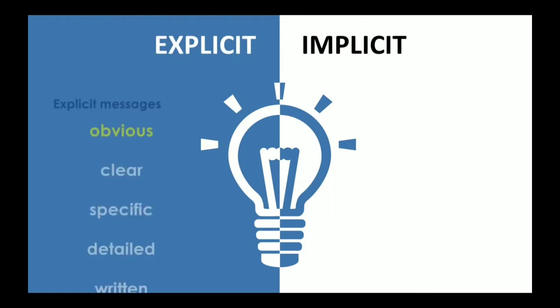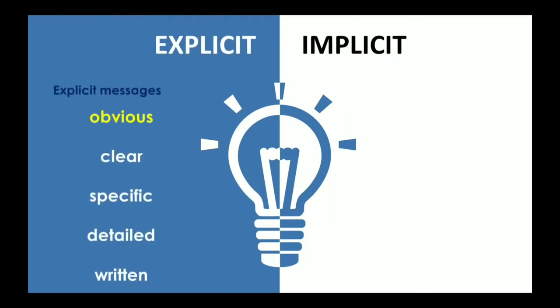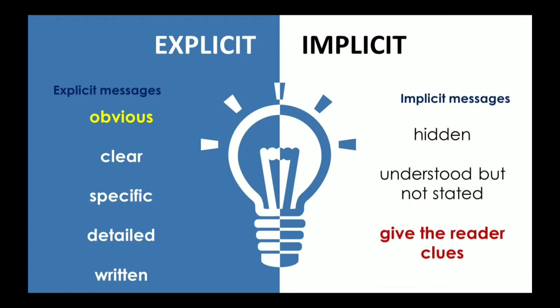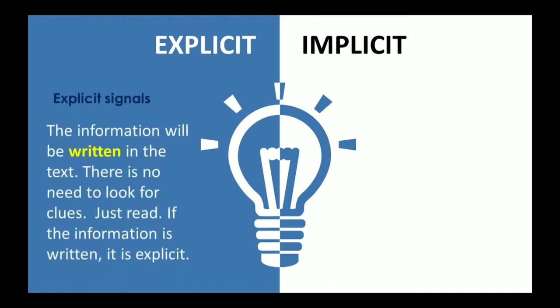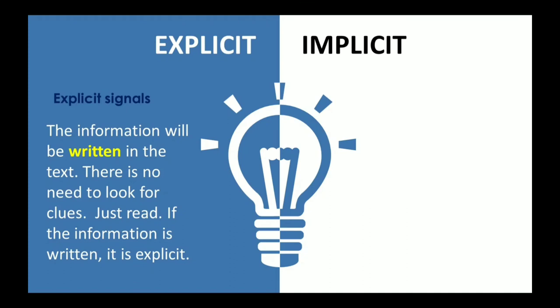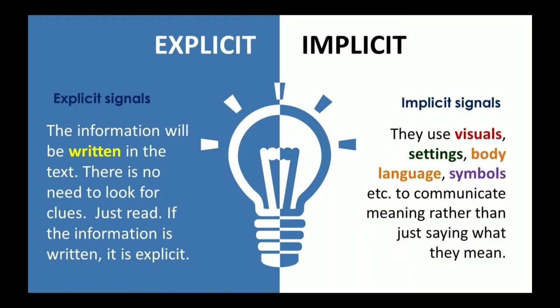Explicit and implicit: Explicit messages are obvious, clear, specific, detailed, and written. Implicit messages are hidden, understood but not stated, and give the reader clues. Explicit signals — the information will be written in the text; there is no need to look for clues, just read. If the information is written, it is explicit. Implicit signals — they use visuals, settings, body language, symbols, etc. to communicate meaning rather than just saying what they mean.